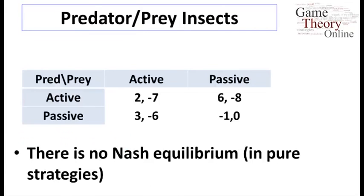This is a different example from the Xi and Bao paper that we looked at earlier — the 2008 paper — where they're looking at Predator-Prey games. In particular, this one is based on insects instead of large mammals. We have a different set of payoffs for being active and passive, and the 2x2 matrix is listed here for the payoffs to active and passive for both Predator and Prey.